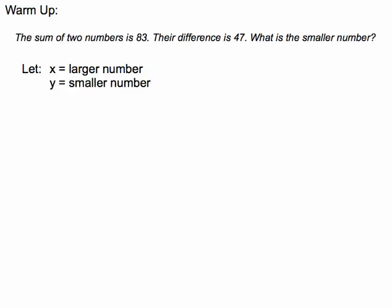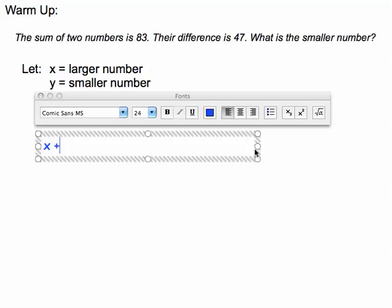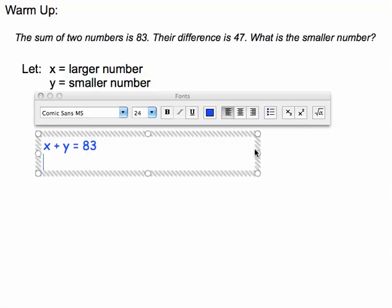The sum of the two numbers is 83, so one of the equations is x plus y equals 83. Then it says their difference is 47, so that means if I take the larger number and subtract the smaller number, I get 47.